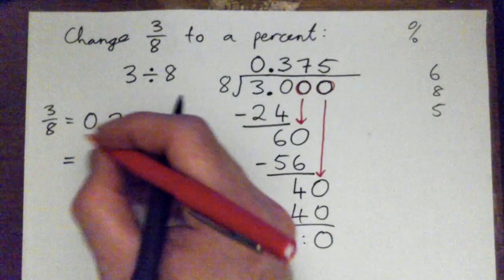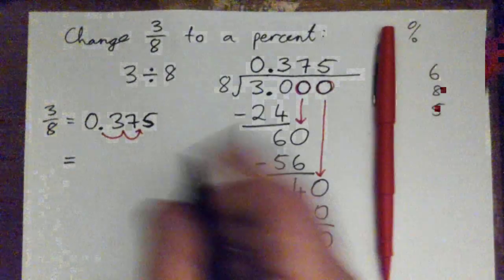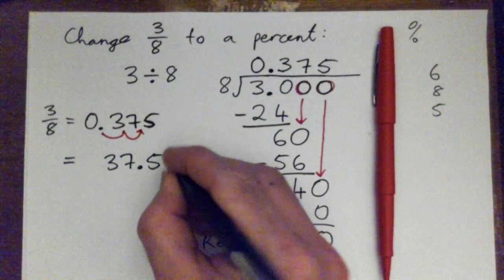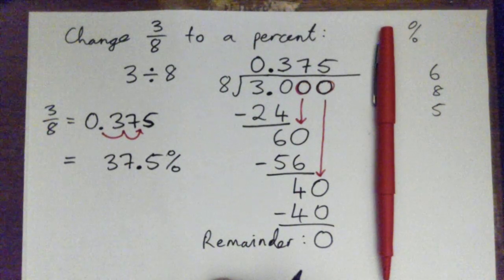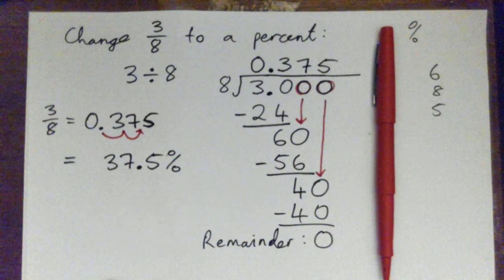Good job, yeah. For a percent, you take this decimal point, move it over one, two spots, and we get 37.5%. Thirty-seven point-five percent. Yep. Good job. Good job. Thank you. Got it.